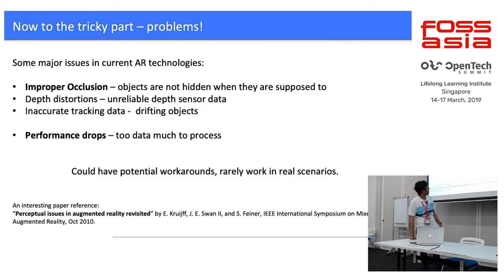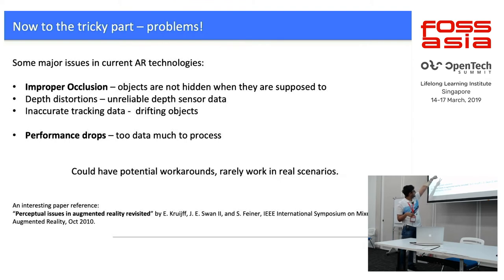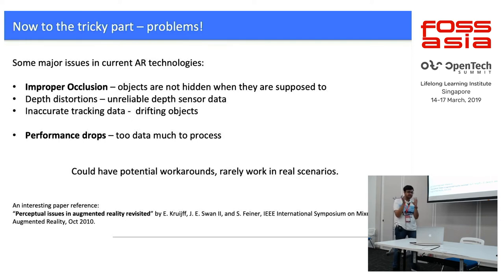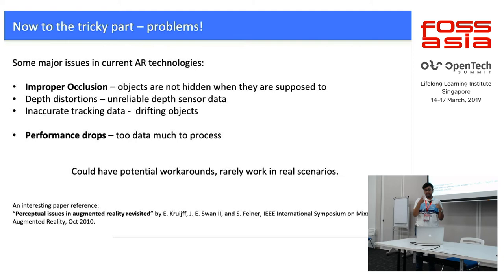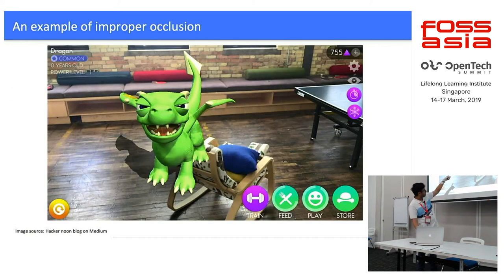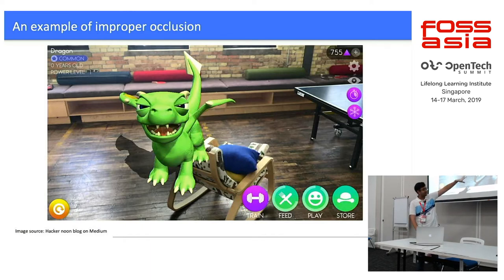Some major issues: improper occlusion and performance drops. Depth distortions and inaccurate tracking data are basically variants of occlusion handling — if you handle occlusion well, distortions and tracking could probably be corrected automatically. You could hard-code all of these, but that's a very difficult task, especially in real scenarios. An example of occlusion: the dragon should ideally be behind the chair, but it appears in front because the camera doesn't know the chair is there.